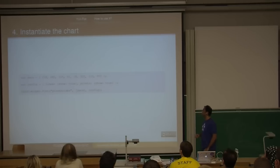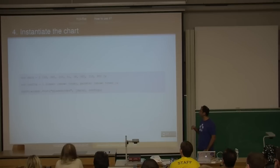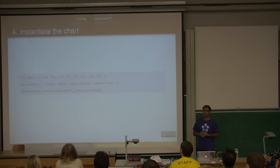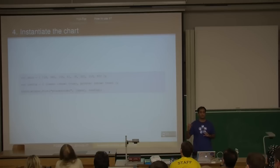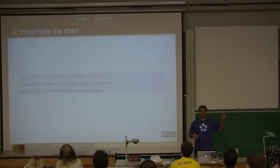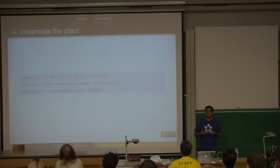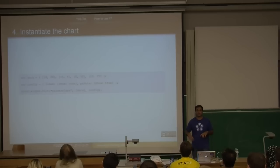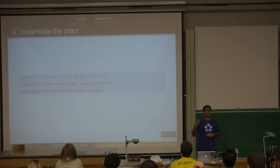Then initialize it: call yahoo.widget.flot, give it the ID of the div, the data array, and the config object. The config object is optional. The data is in an array because Flot can take multiple data arrays and plot all of them on the same chart — for example, one data source for disk performance and another for network performance, possibly with different axes because the units and scales are different.